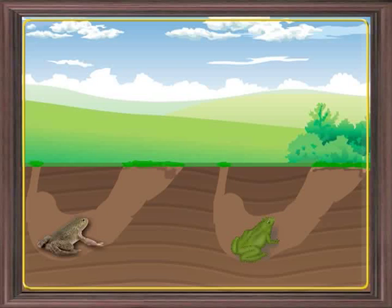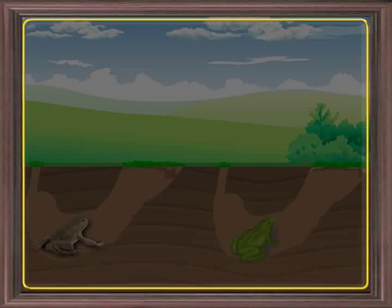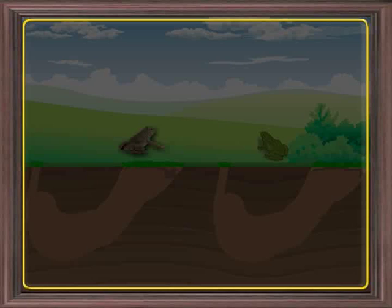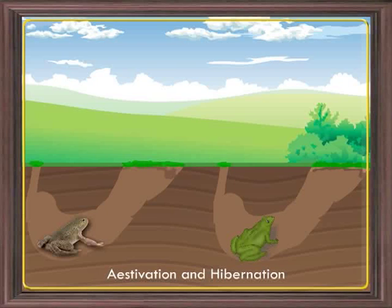During summer, frog burrows deep into the soil and undergoes a summer sleep called estivation. In the burrows, there is very minimal evaporation of moisture. Frog comes out only during the night to feed. Even in the winter season, frog goes into burrows — this is called winter sleep or hibernation. During both estivation and hibernation, frog respires through skin.